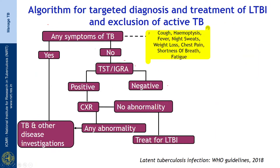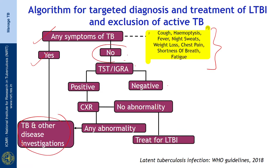What is the algorithm for targeted diagnosis and treatment for LTBI and exclusion of active TB? Symptoms suggestive of TB — which may include cough, haemoptysis, fever, night sweats, weight loss, chest pain, shortness of breath, or fatigue — should be inquired about. If the patient reports any symptoms, they should be evaluated for TB and other diseases. If they report no symptoms, TST or IGRA should be performed.